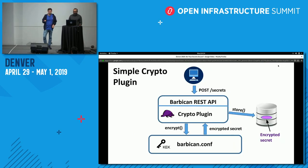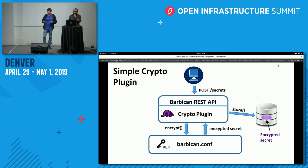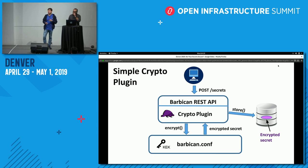The first plugin is the Simple Crypto plugin, which we'll use as a baseline. As the name suggests, it's not the most secure option, but it's valid for development, CI gates, and proof of concept. The user sends a POST to the Barbican REST API. Barbican looks into its configuration file for the key encryption key (KEK) — one master key stored in the Barbican config file. The plugin encrypts the user's secret using that KEK and stores the encrypted secret in the Barbican database. Very straightforward.